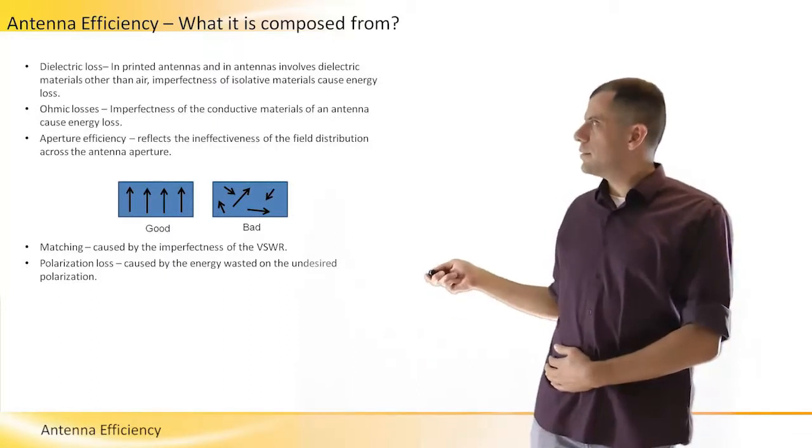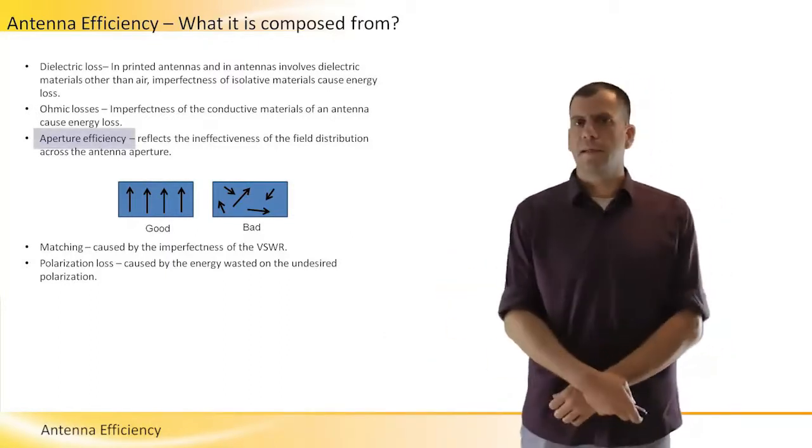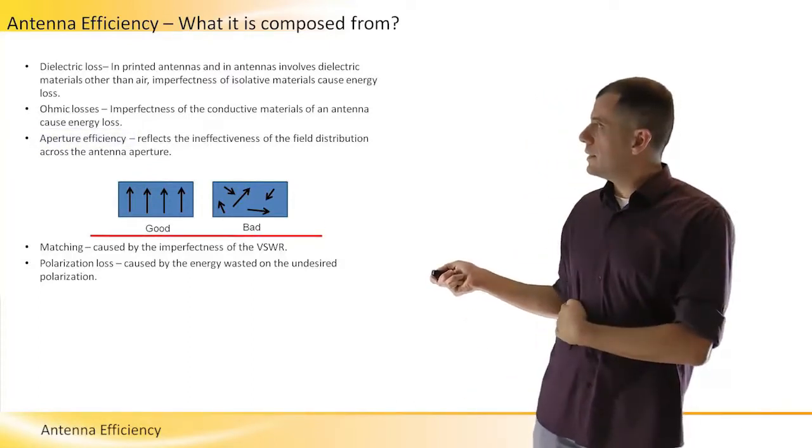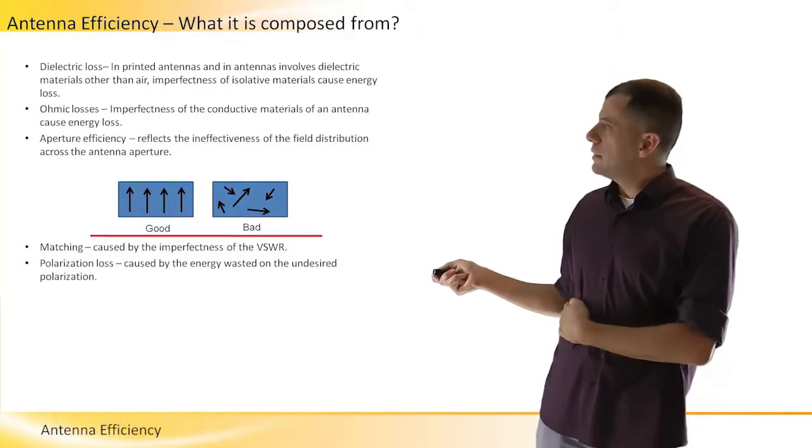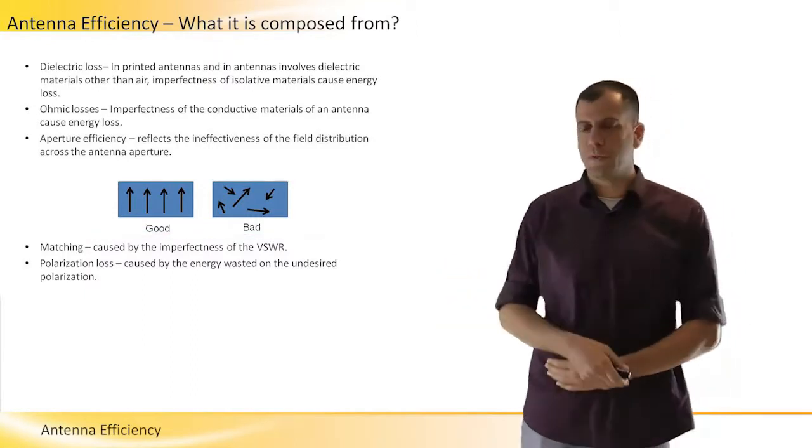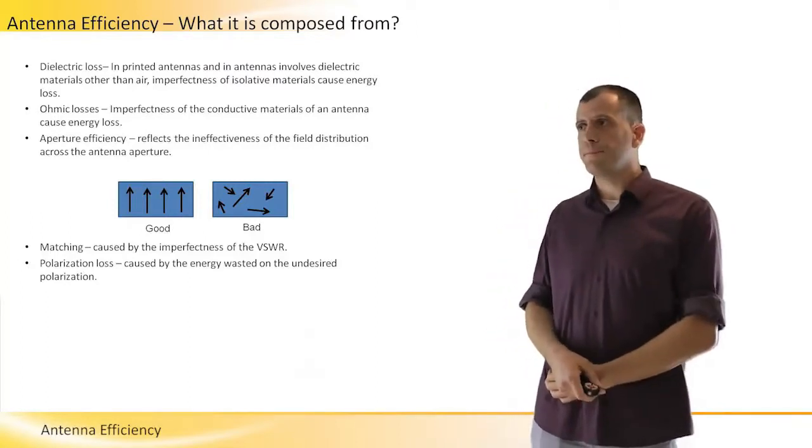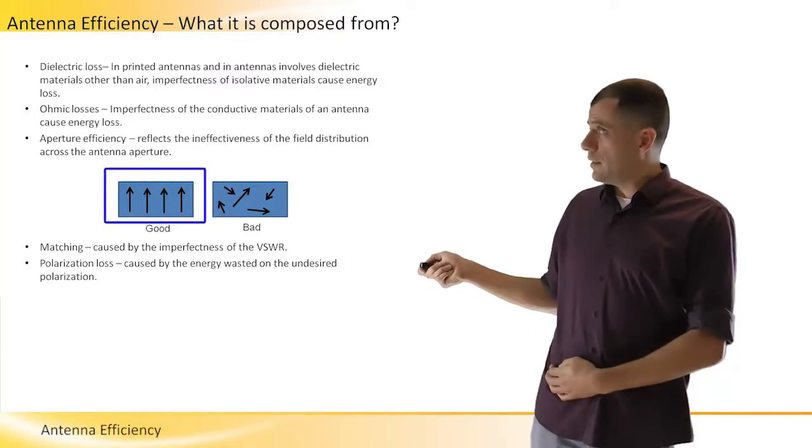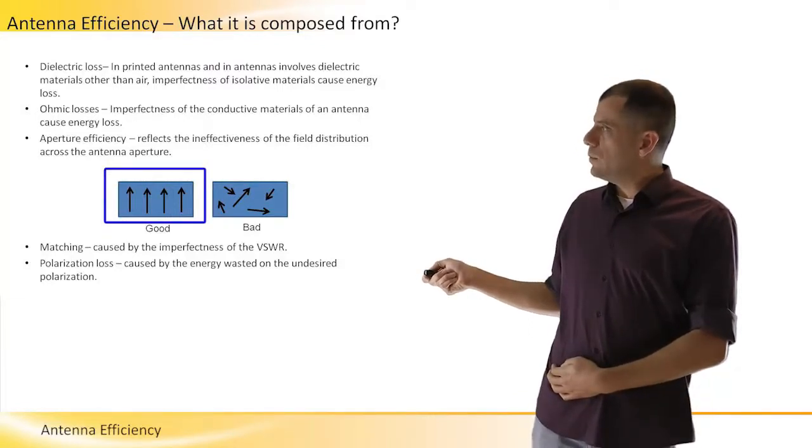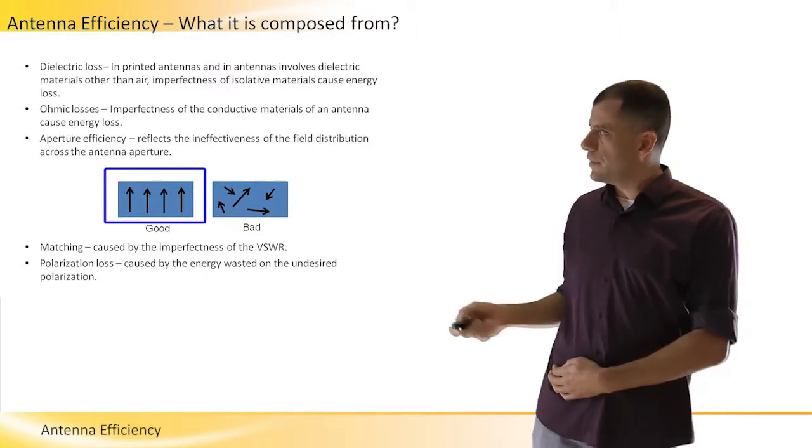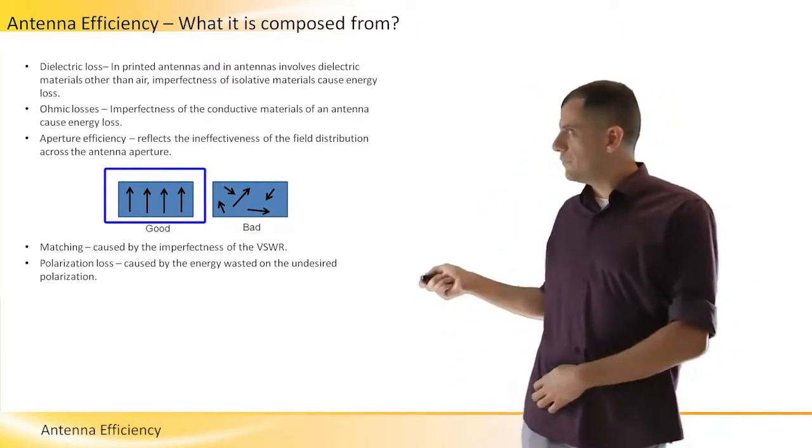The next reason for reducing the antenna efficiency is the aperture efficiency. If we look at the example here, we see two apertures. The aperture here is rectangular and if we refer to antenna that we have seen before, it is most like the horn antenna. The horn antenna also has a rectangular aperture and we wish that the electric field will be directed in the same direction and have the same phase in order to have a very effective aperture.